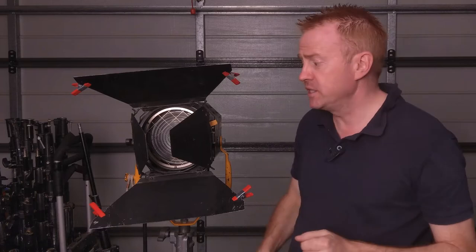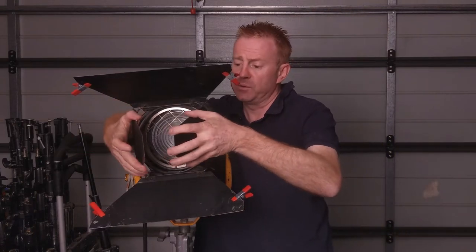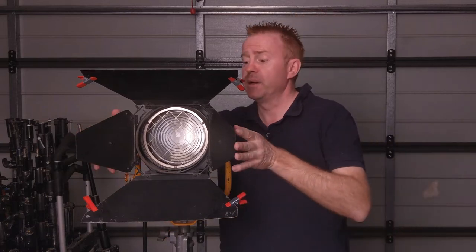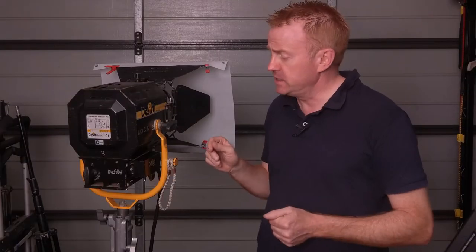So if we want to increase the amount of light we open up the barn doors and if we want to decrease the amount of light we close the barn doors up. All right, so this is ready to be choked up, so let's have a look.